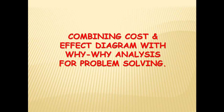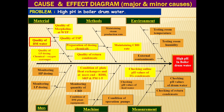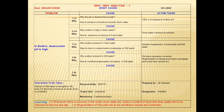Now an example of a cause and effect diagram combined with YY analysis. In this cause and effect diagram, the problem is high pH in the boiler drum. Major causes are shown in yellow shade and minor causes in brown shade. Quality DM water was identified as the most possible cause among the major causes for high pH in the boiler drum. YY analysis was also done to find out the root cause — the DM unit was not monitored closely and regeneration of the unit was not done as per schedule.